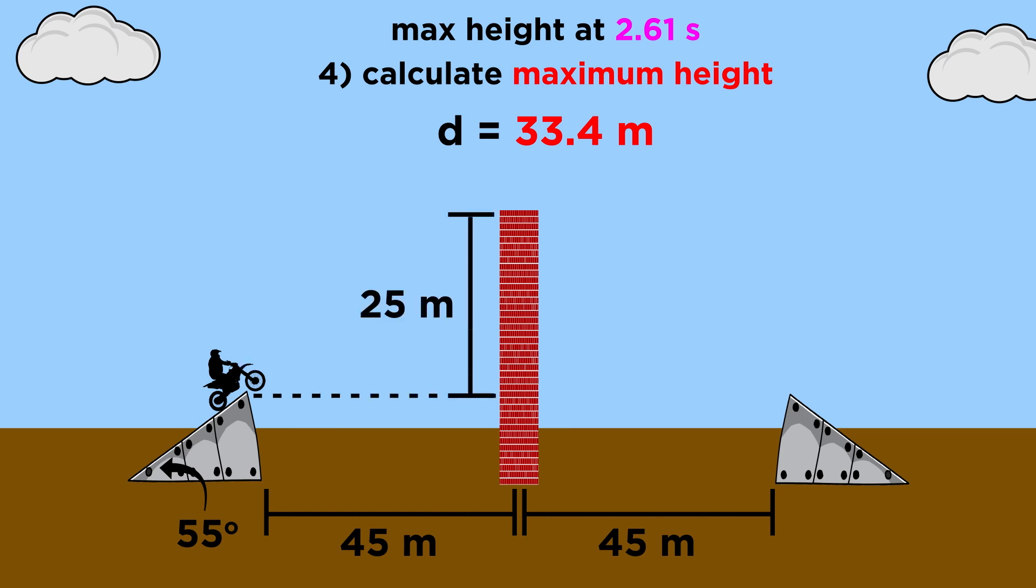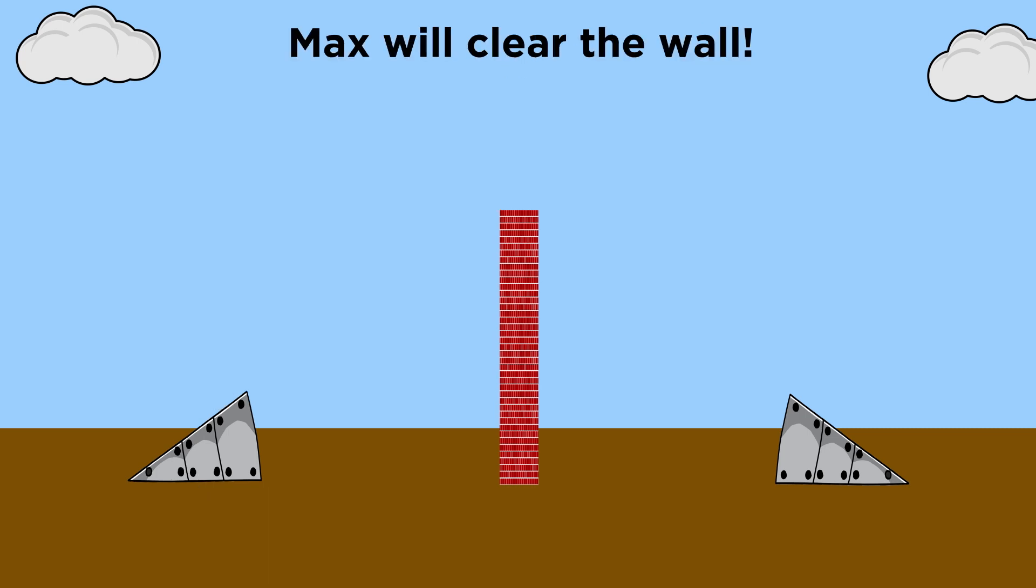The distance from the top of the ramp to the top of the wall is only twenty-five meters, so it looks like he will get over the wall with room to spare. Congratulations, Max, you've done it again!